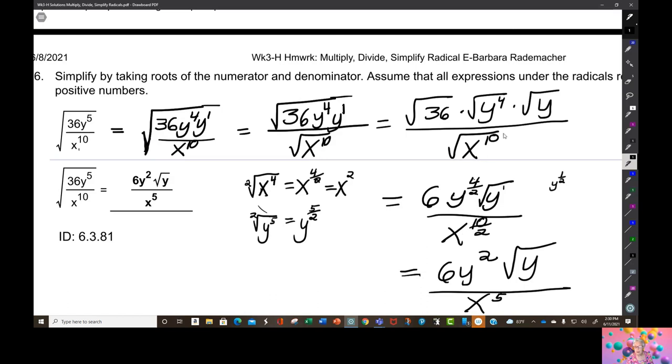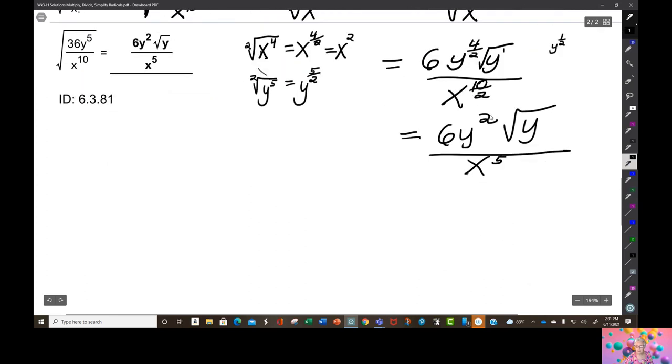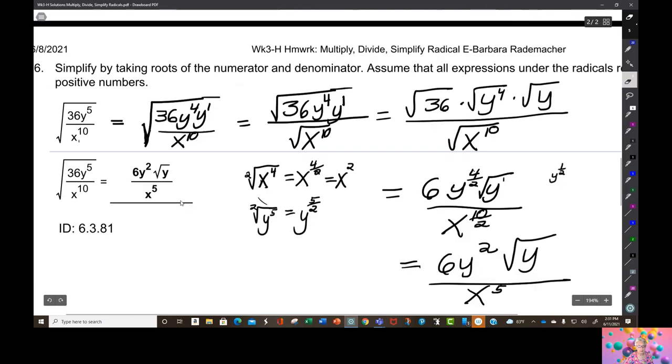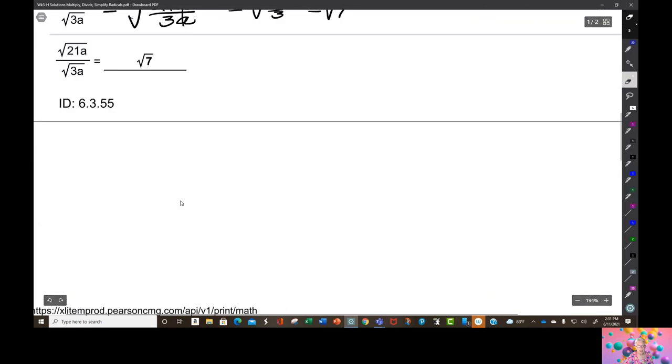X to the, the square root of x to the 10 is going to be x to the 10 over 2. And you know that 10 divided by 2 is 5. So, here's our answer. 6 times y squared times the square root of y over x to the 5th. And let me move this 2 closer to the y. 6 times y squared times the square root of y. Okay, never mind.